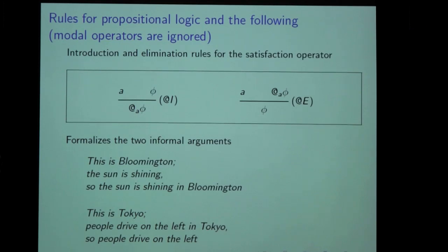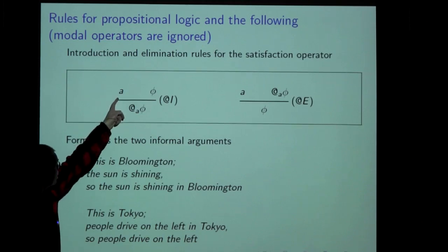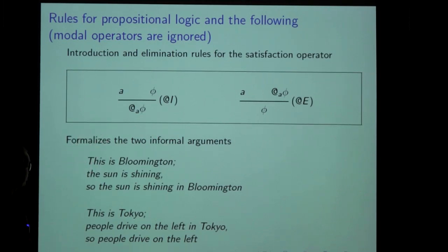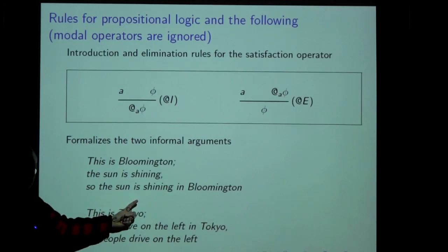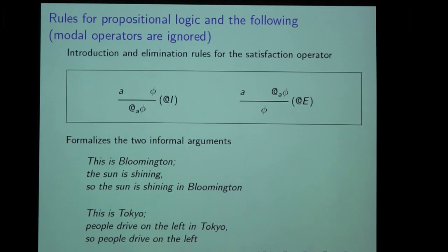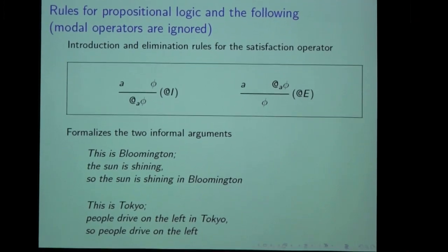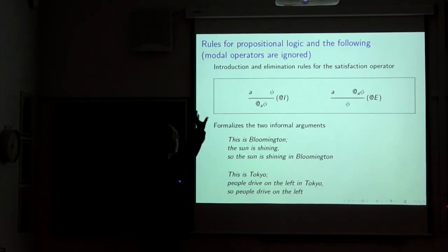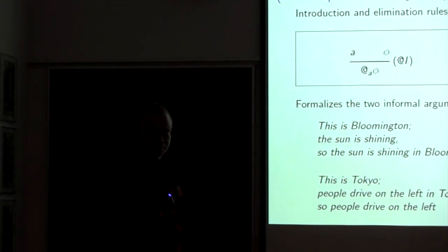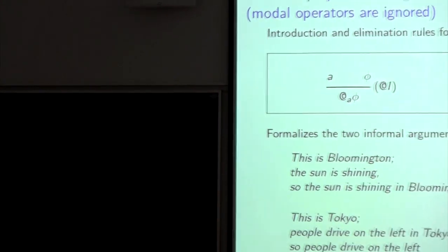You can also explain it in terms of spatial locations, which is the example given originally by Jerry Seligman. If we imagine that the nominal A stands for 'this is Bloomington' — a city in the US — and phi stands for 'the sun is shining,' then we are entitled to conclude that the sun is shining in Bloomington. So the idea is that we extend our propositional natural deduction system with rules for the satisfaction operator that fit this pattern. We can also add rules for modal operators, but I will leave them out as they are not relevant here.